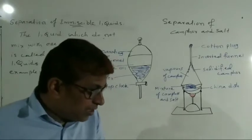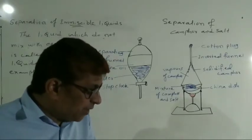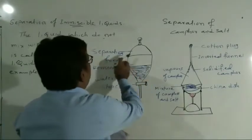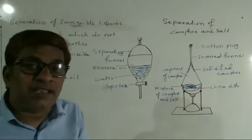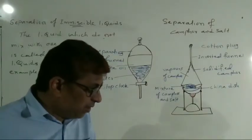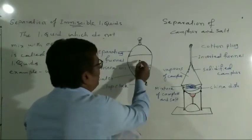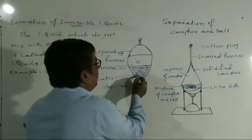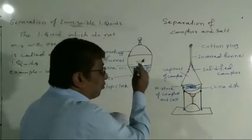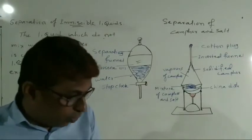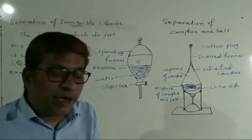See the textbook — some examples are given. Take a separating funnel. This instrument or device is called a separating funnel. Pour the mixture of kerosene oil and water — kerosene oil here, and water here — into the separating funnel.